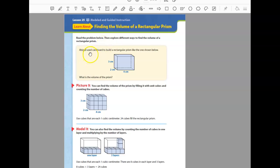Abigail used cardboard to build a rectangular prism like the one shown below. Rectangular means it's rectangle in shape. A prism means it's three-dimensional with a flat top and bottom and flat sides. If it was a pyramid, it would come up to a point. This is like a shoebox, Kleenex box, or cereal box.